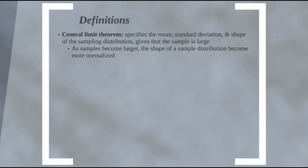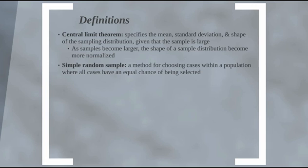What the central limit theorem essentially says is that as samples become larger, the shape of a sample distribution becomes more normalized. That means when the sample becomes larger, the mean, median, and mode are fairly in the middle and the standard deviations are standardized across the sample. As our sample becomes larger, the distribution becomes more normalized.